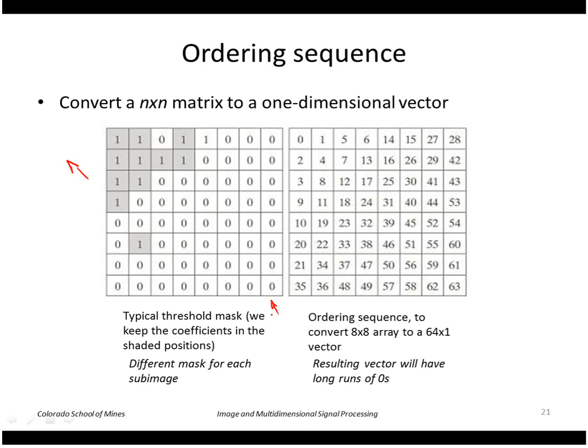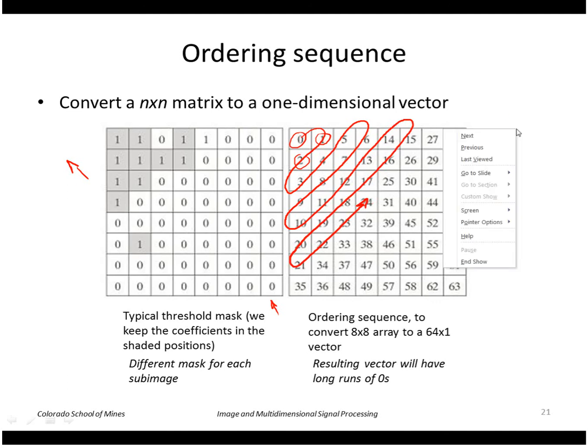To convert this to a one-dimensional string of values, we take our coefficients in this order. We'll start at the top left, take the one next to it, then the one below that, and keep taking them in this zigzag order like this. The reason we want to do that is because we're likely to have zeros in the lower right. So by the time our zigzag gets down to the lower right, we have long runs of zeros and we'll use run length coding to encode those long runs of zeros. So that's very efficient.